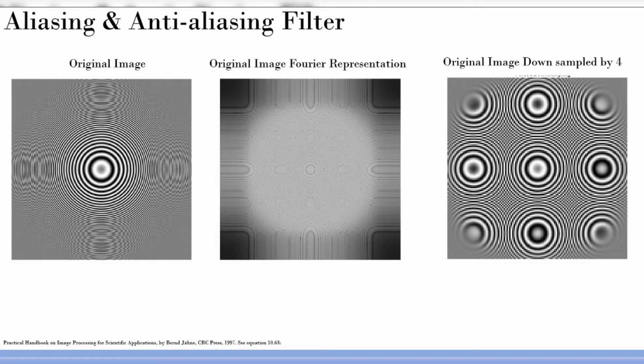Welcome back. This is one of the most interesting topics for me, and the beauty of signal processing or image processing with Fourier transform is really illustrated in this particular chart. Consider an image that looks like concentric circles with some sort of ripples happening here. The Fourier transform of this image looks like this, so you should be very comfortable with Fourier transform and all those aspects.